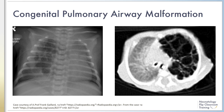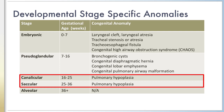The canalicular stage and saccular stage between 16 and 25 weeks are critical for lung development. Pulmonary hypoplasia typically occurs during these stages and is associated with conditions that cause oligohydramnios, thoracic compression, decreased thoracic space, and decreased fetal breathing. While amniotic fluid and fetal breathing are known to be critical to lung development, the precise pathophysiologic mechanism relating oligohydramnios to pulmonary hypoplasia is not well defined.